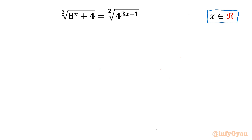Let us get started by writing one powerful exponent law. It is x^(a minus b), which we can write as x^a divided by x^b.